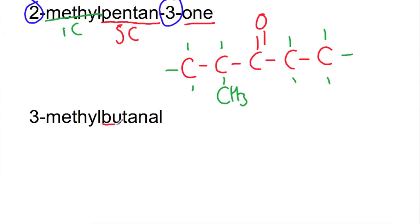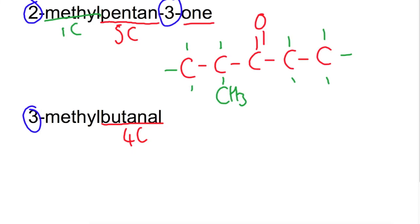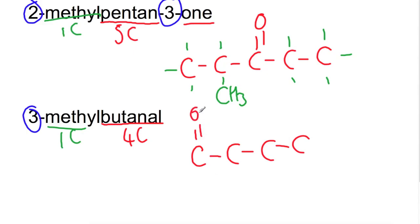Looking at the second example, we have 3-methylbutanal. We have four carbons and with the 'al' ending we know that we have an aldehyde, so that must be carbon number one. On the third carbon we have a methyl branch. Drawing this out, we're going to have four carbons, with an oxygen and a hydrogen on carbon number one, and a methyl group on carbon number three. Then go in and fill in the hydrogens.